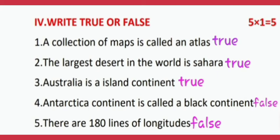Section four: True or False. Number one: A collection of maps is called an atlas. True.